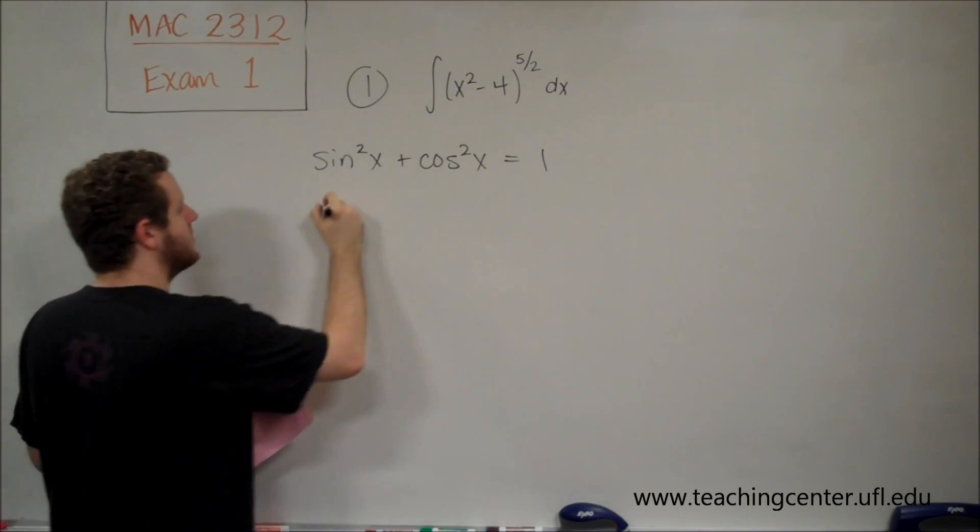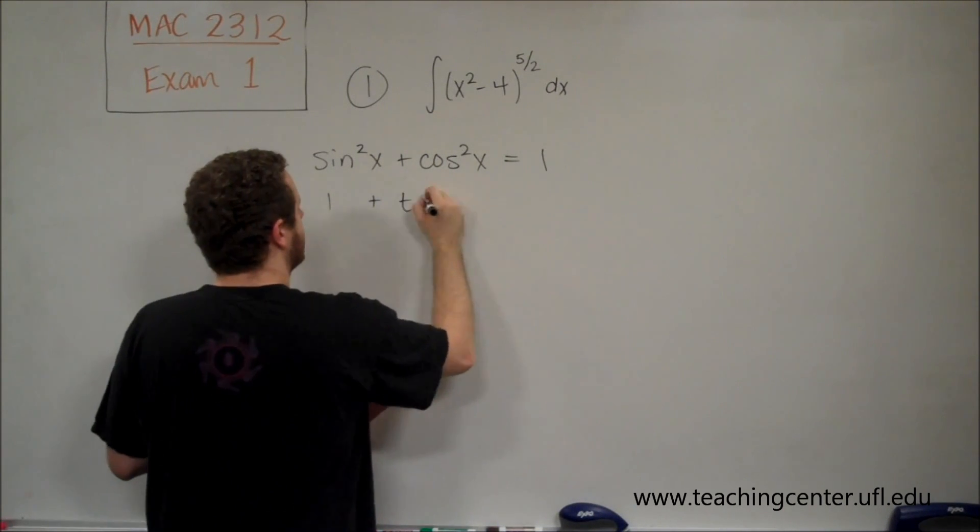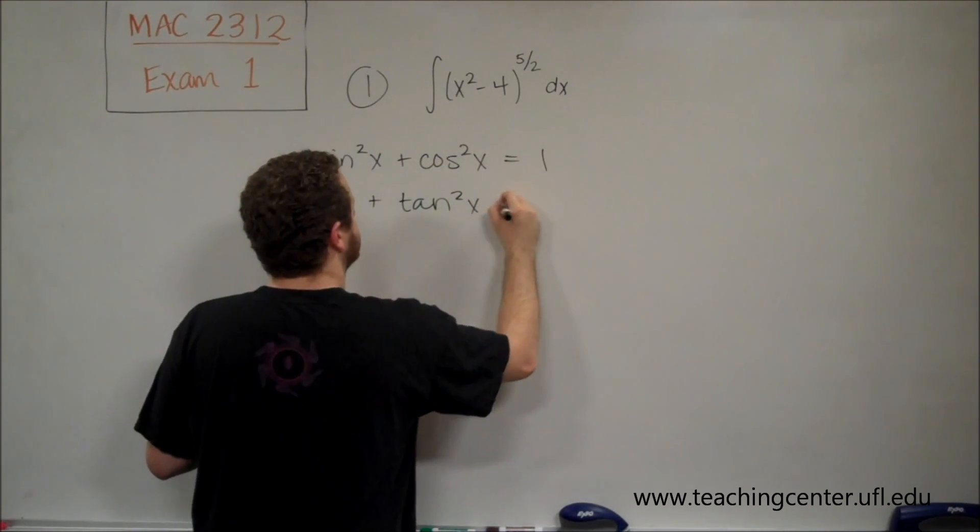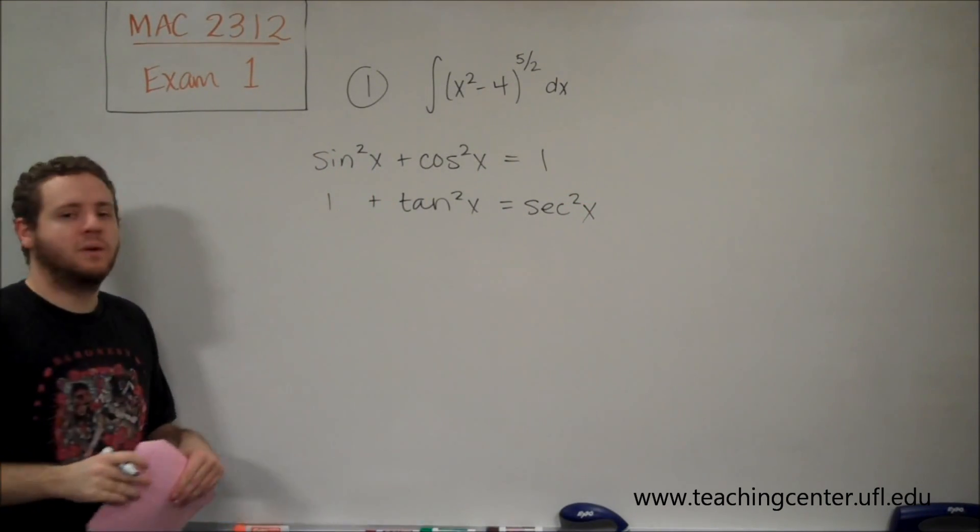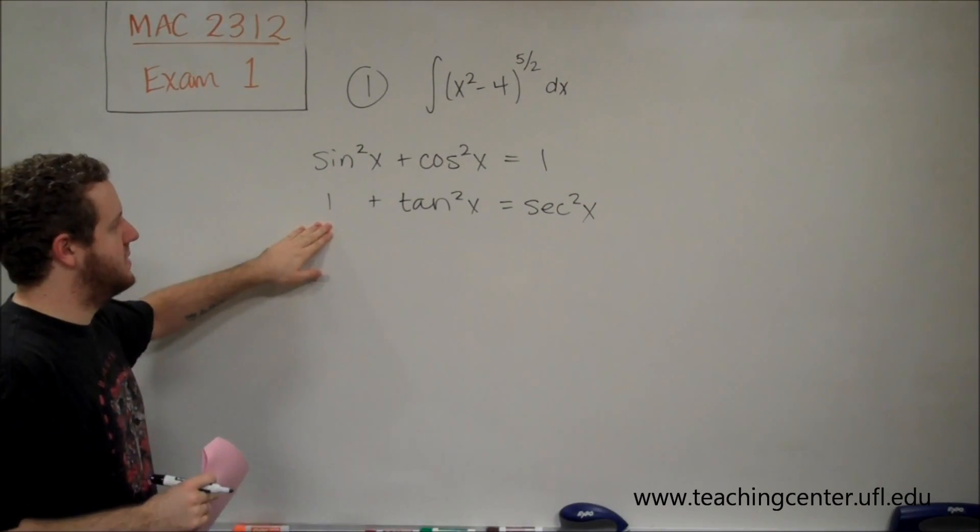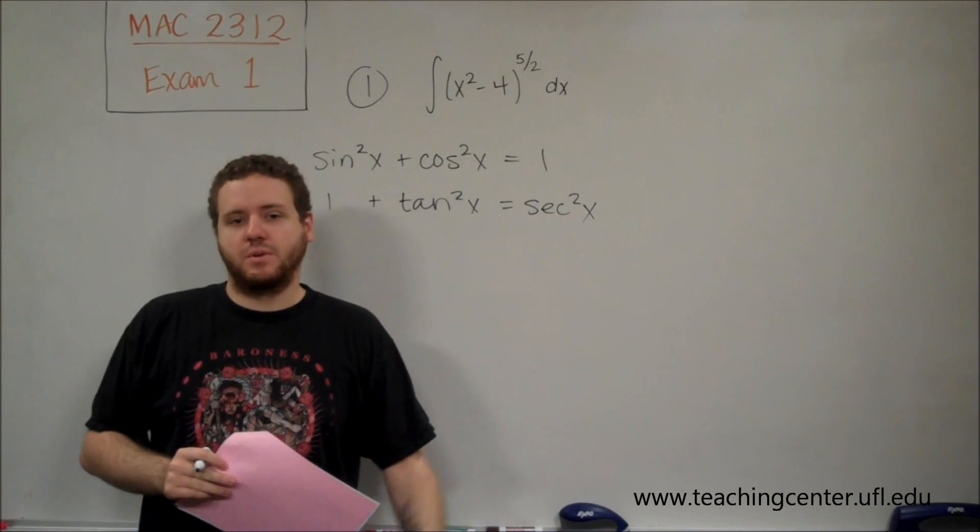And we're going to use 1 plus tan squared equals secant squared. And remember that you can get this second one by just dividing every term there by cosine squared.